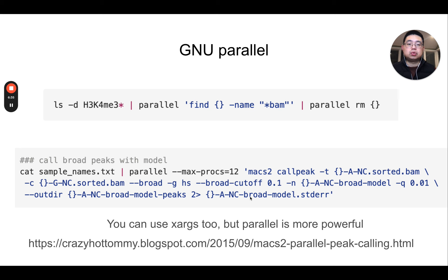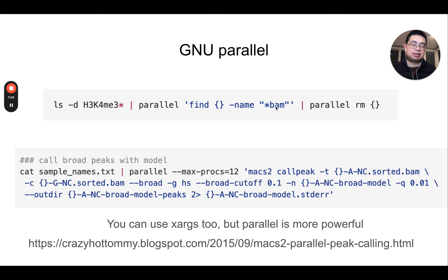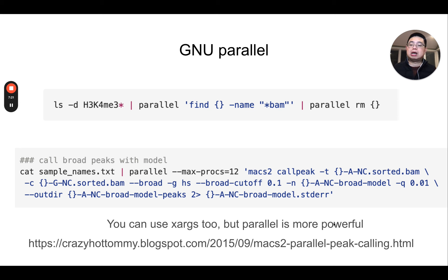This tool is called GNU Parallel. You may be familiar with for loops for repetitive work, but after I learned GNU Parallel, I barely use for loops. In this example, I'm finding all folder names starting with a histone modification like H3K4 trimethylation, finding all files with a specific BAM file name, and then removing all of them in parallel. You could also use xargs, which is a more built-in shell function, but parallel is much more powerful.